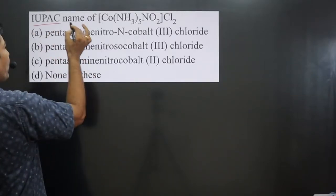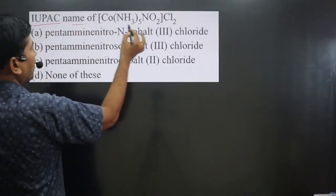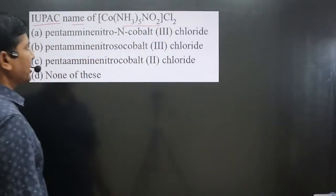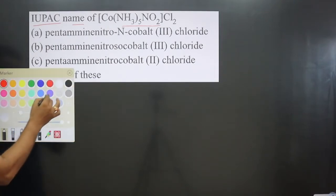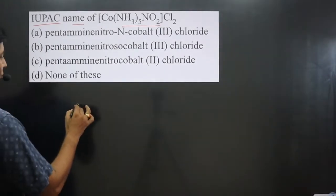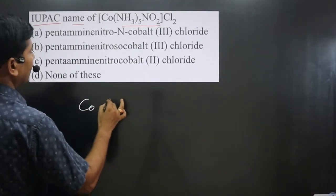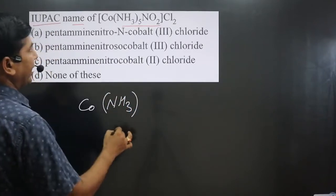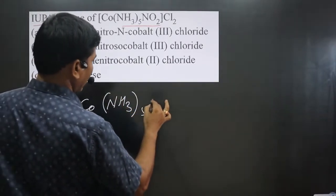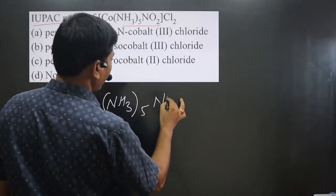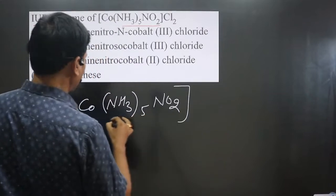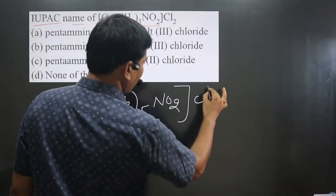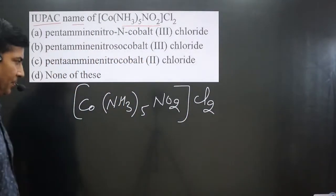The question asks for the IUPAC name of the complex. Let me write the complex. We have cobalt, then ammonia as a neutral ligand, and then we have an O2 — it is an ambidentate ligand. Then we have the counter ion Cl2.